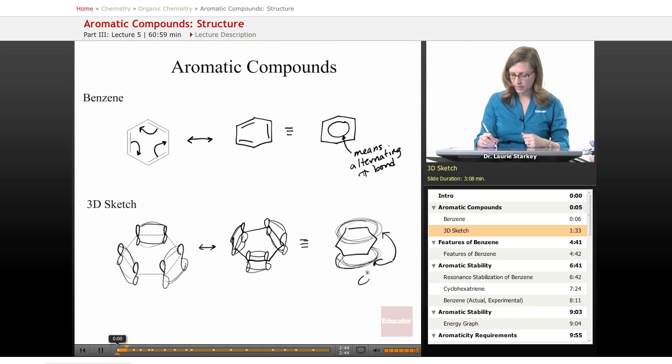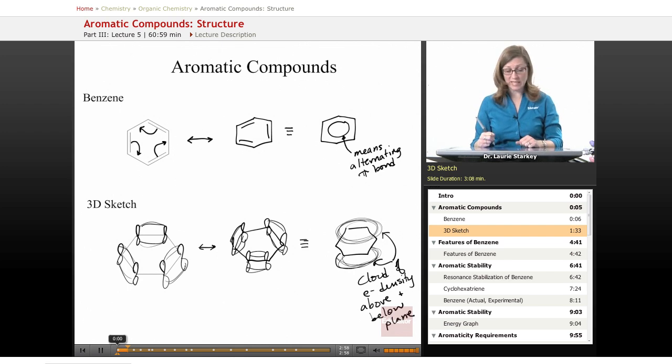This is a cloud of electron density above and below the plane. So benzene is a planar molecule and we have a cloud of electrons above and below.